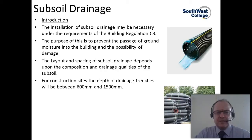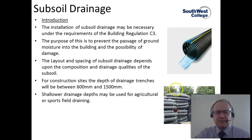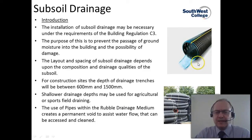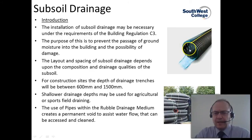For construction sites, the depth of drainage trenches tends to be between 600 to 1500 millimetres, and shallower drainage depths may be used for agricultural or sports fields where the ground needs to be very dry. The use of pipes within the rubble drainage medium creates a permanent void which assists the water flow and can be accessed and cleaned when necessary. Modern drainage systems tend to be made from plastic pipes, such as the example shown here, with small cutouts in the pipe to allow rainwater to enter and then drain away.